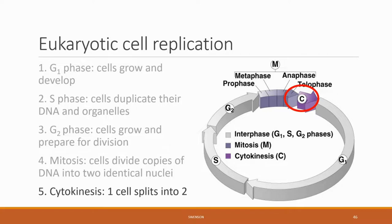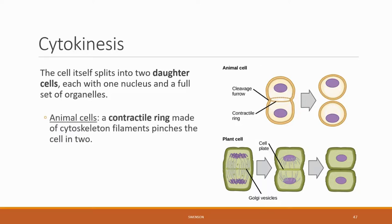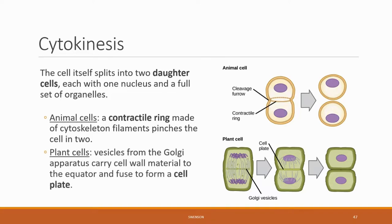All that is left to do is cytokinesis, where this cell splits into two, creating two cells from one — a set of what are called daughter cells. In animal cells, this is done with a contractile ring made of cytoskeleton filaments that pinches the cell in two. In plant cells, vesicles from the Golgi apparatus carry cell wall materials to the equator and fuse to form a cell plate, leading to the creation of two distinct cells.